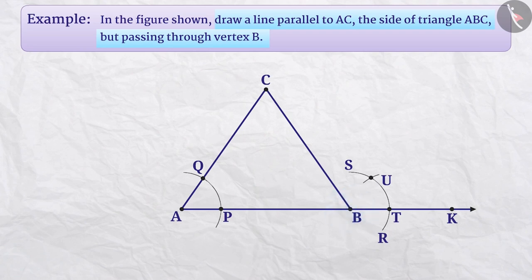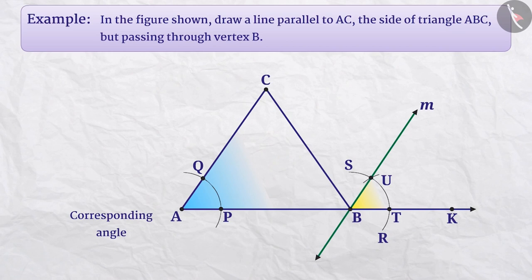Now, join B and U to draw the line M. Here, angle CAB and angle UBT are corresponding angles and they are equal.